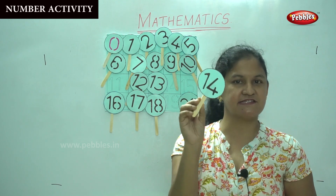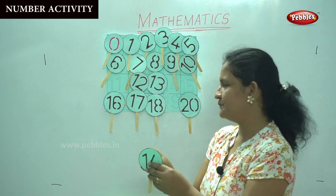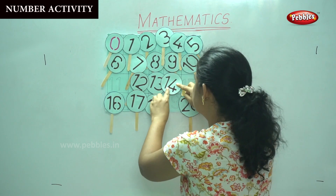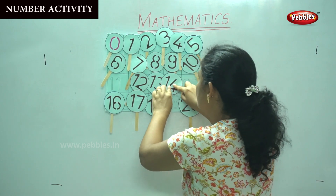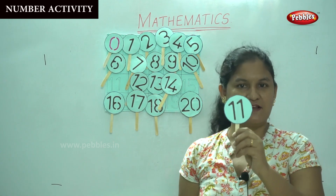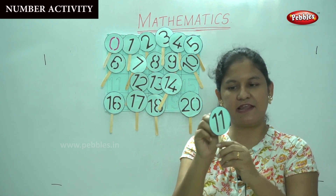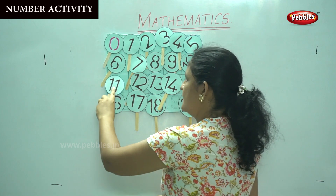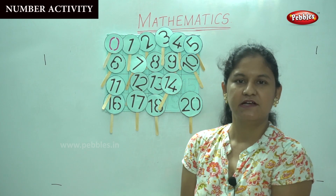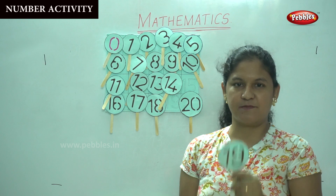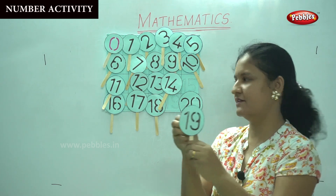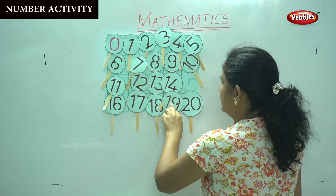So this is number 14. I am going to see where I can place number 14. Then we have number 15. Then we have come to number 11. So I am placing number 11 on the board. The next number is number 19. I place 19.